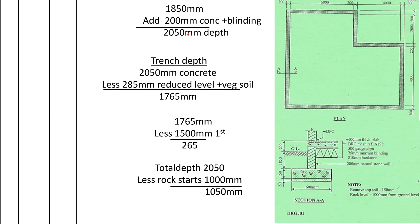To get the depth of the trench we need to excavate, we know we excavate from the reduced level. But here in the diagram, we have been given the depth from the ground level to the concrete as 1,850. Concrete is 150 plus blinding 50, so the total depth from the ground level to below the concrete is 1,850 plus 150 plus 50, which gives us 2,050. Since we had already reduced the level and excavated topsoil by 285, the total depth we need to excavate is 1,765.